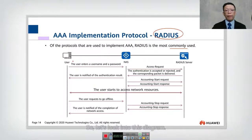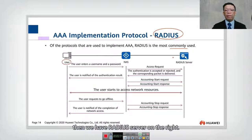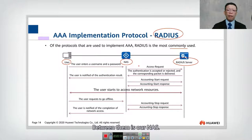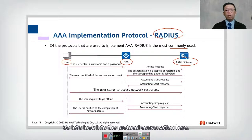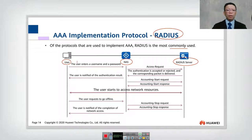Let's look into this diagram. We have the user on the left, the RADIUS server on the right, and between them is our NAS — Network Access Server. Let's look into the protocol conversation here. The first step is the user enters a username and password.